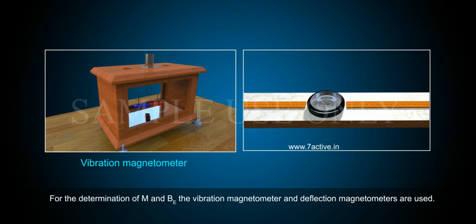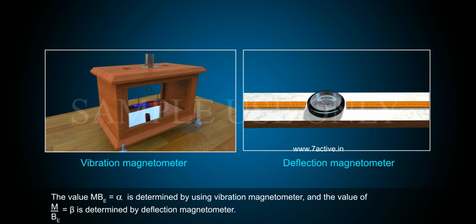The value M times BE equals alpha is determined by using vibration magnetometer. And the value of M by BE equals beta is determined by deflection magnetometer.